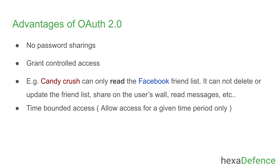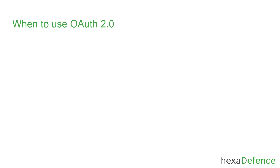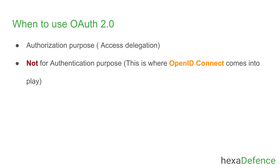Now we know what Open Authorization is and what are the usages of it. As the last section, let's learn when to use Open Authorization. Open Authorization is an access delegation protocol, so this is used for authorization purposes only and should not be used for authentication. When it comes to authentication, OpenID Connect comes into play.